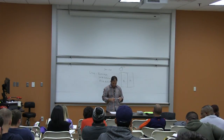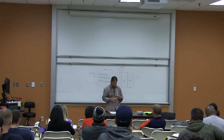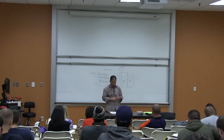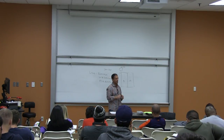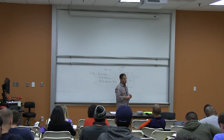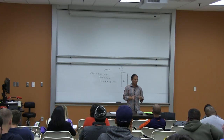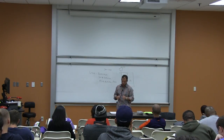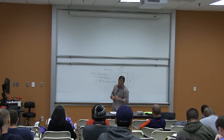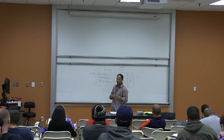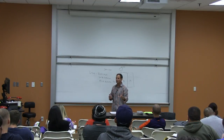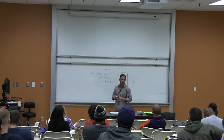Personal property is movable. It transfers with a bill of sale. Another term for personal property is chattel. Examples of personal property include furniture, cars, jewelry, clothing, money, stocks, and bonds. If it's not permanently attached to the land, it would be personal property. Personal property transfers with a bill of sale, as opposed to real property which transfers with a deed.